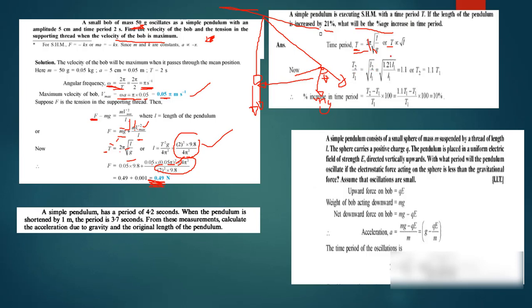We have T2 over T1. Since the period is proportional to the square root of the length, if the length increases by 21%, then length 2 equals L1 plus 0.21·L1, which is 1.21·L1. So T1 over T2 equals the square root of 1/1.21, giving us T2 equals 1.1·T1.